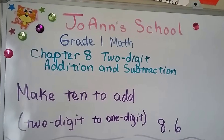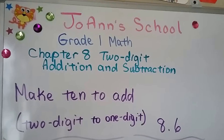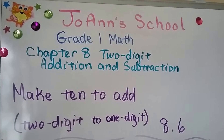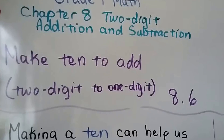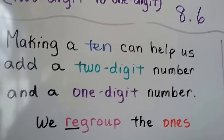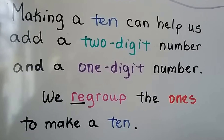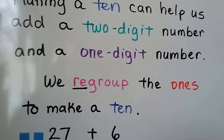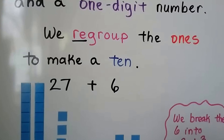Make ten to add. This is adding a two-digit number to a one-digit number, and this is an introduction to regrouping. This is lesson 8.6. Making a ten can help us add a two-digit number and a one-digit number. We can add them together. We regroup the ones to make a ten.